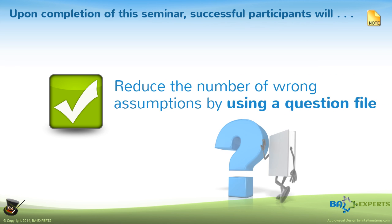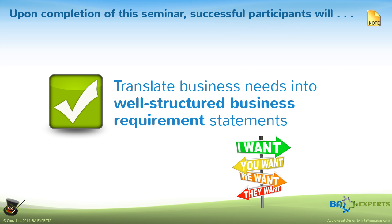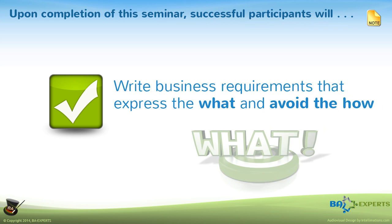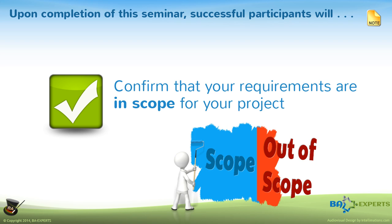Assumptions are another major challenge to our communicative abilities. We'll discuss using a question file to reduce the impact of incorrect assumptions. As the title of the workshop suggests, we'll give you the ability to translate business needs and wants into requirements as the primary tool for defining a future solution and setting the testing stage. As soon as you mention requirements, the discussion around stating what, not how, seems to creep in. We'll give you a technique that helps you stay out of the technology early in the project. Scope creep is also a major challenge for those who use technology to change the business landscape, and avoiding it has become the holy grail for project managers everywhere. This workshop includes a couple of ideas that just might help here.